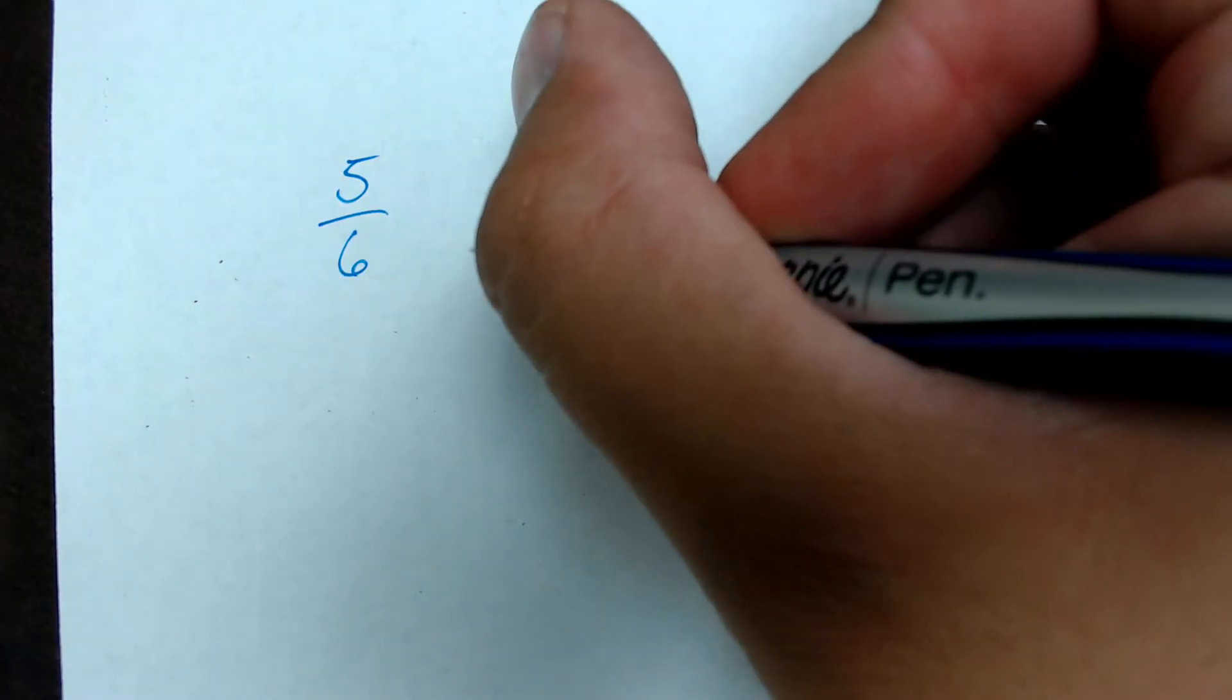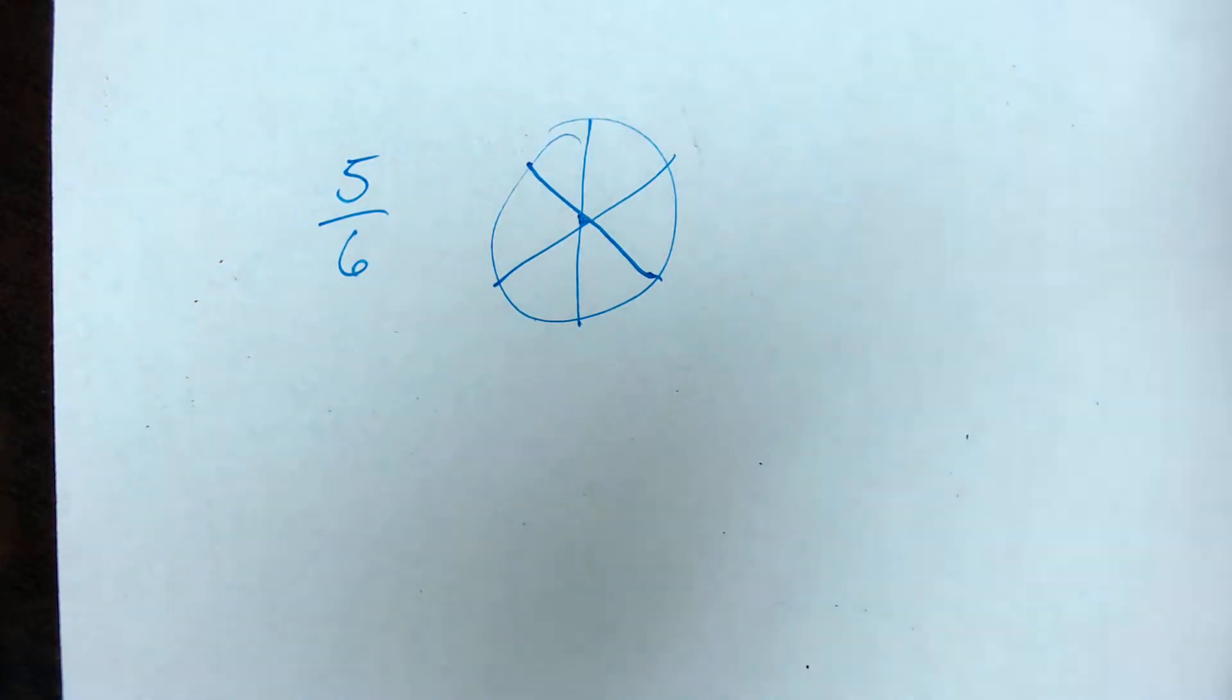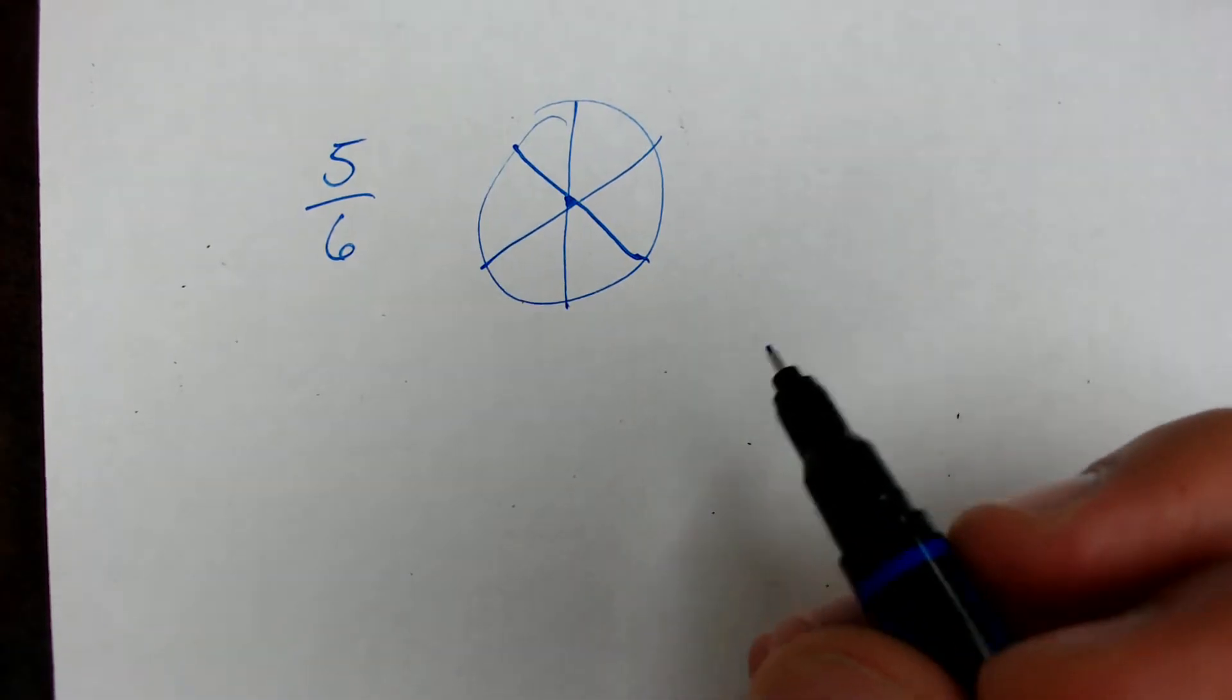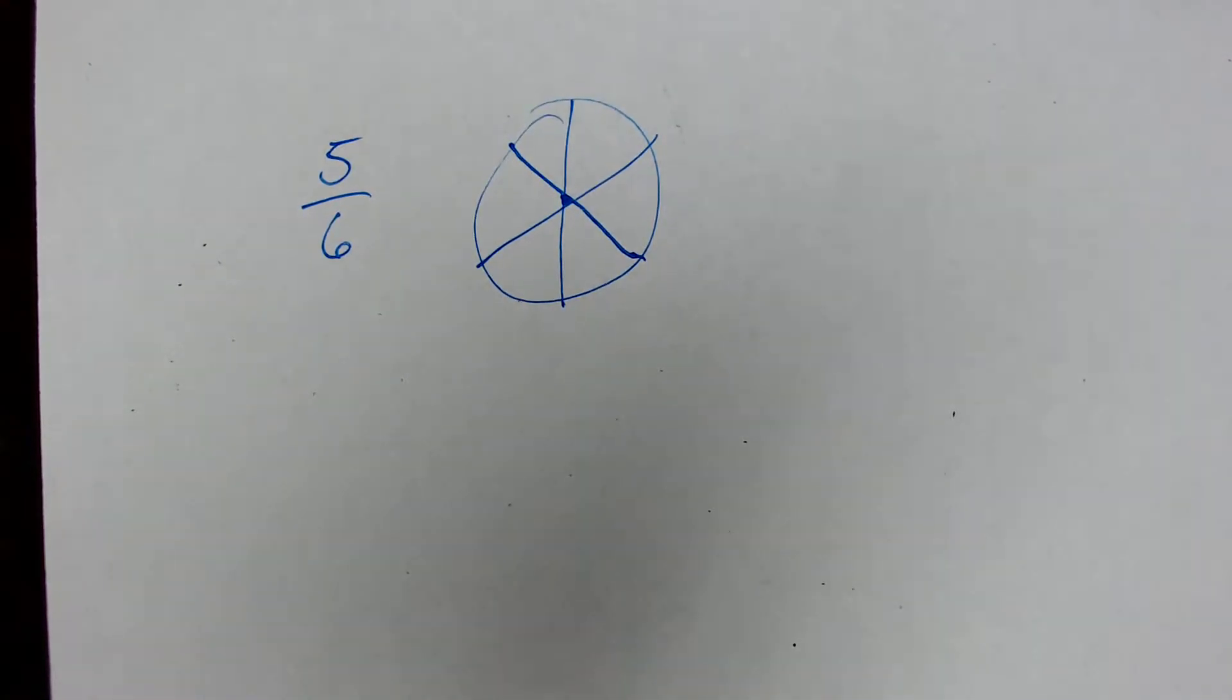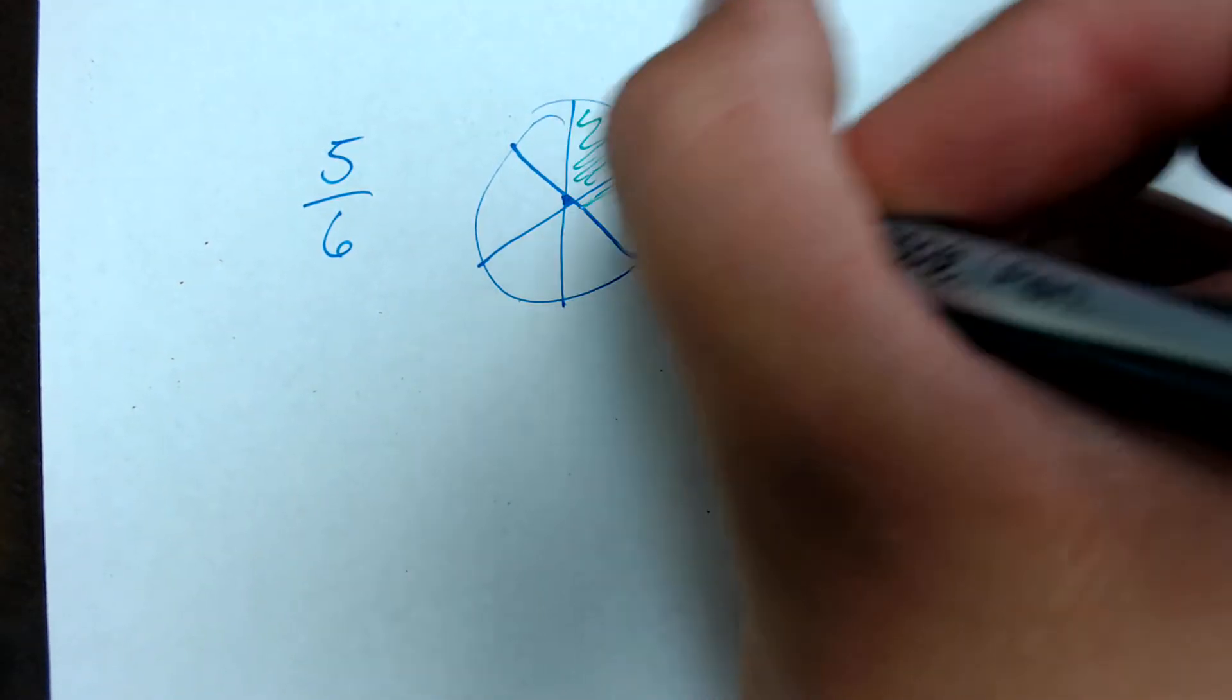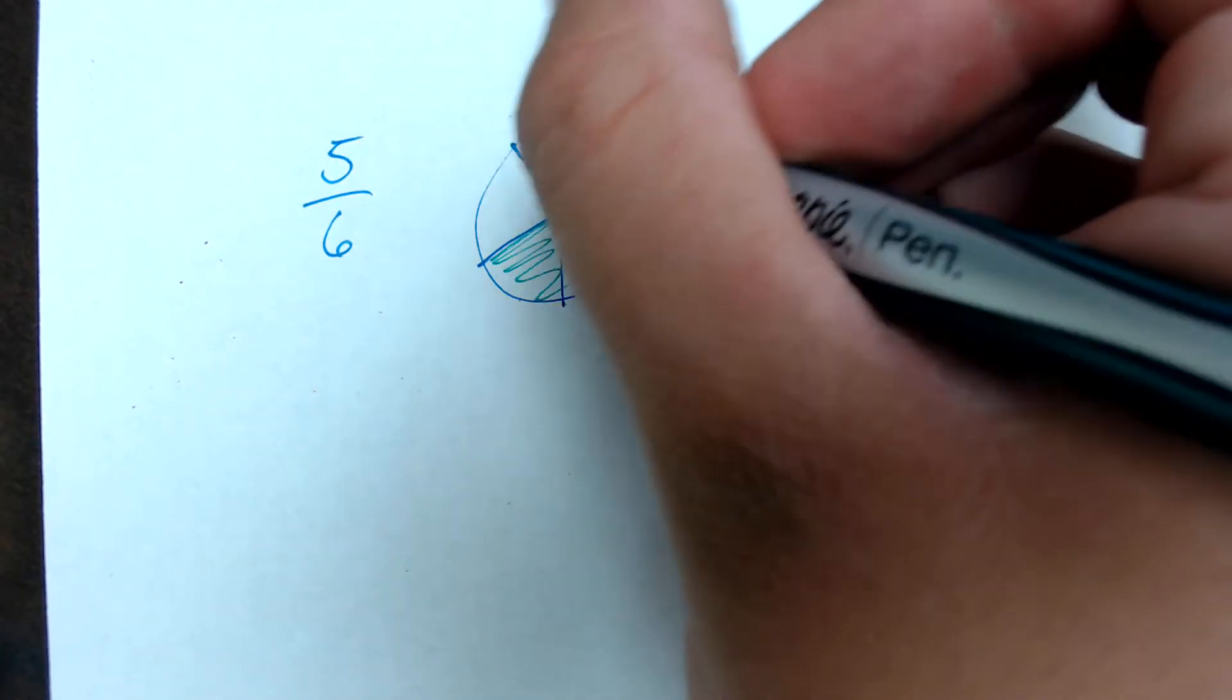So if we were to apply this to a circle, we'd take our circle, we'd cut it into six roughly equal pieces, because I'm not a great artist. So we cut it into six pieces, and of those six pieces, I am dealing with five of those six pieces. So one, two, three, four, and five. All right, so this would be five sixths.